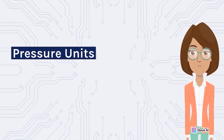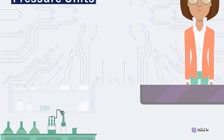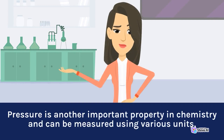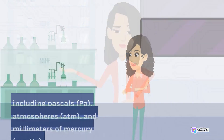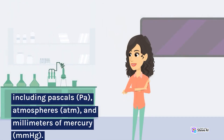Pressure units. Pressure is another important property in chemistry and can be measured using various units, including Pascals (Pa), Atmospheres (Atm), and Millimeters of Mercury (mmHg).